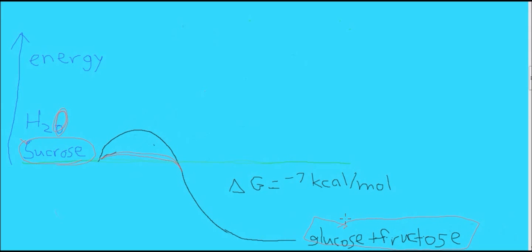As a result, we also release some energy. This is an exergonic reaction. The system loses seven kilocalories per mole, which means that seven kilocalories per mole are released and can carry out other reactions in the body.